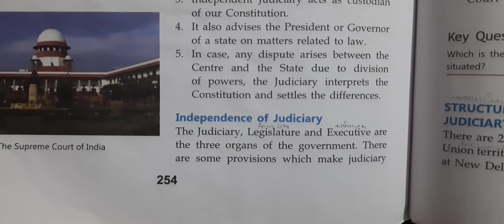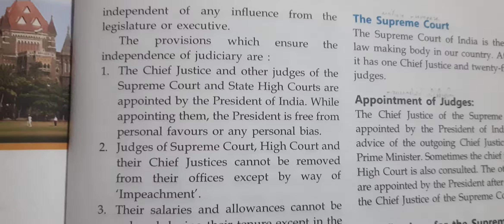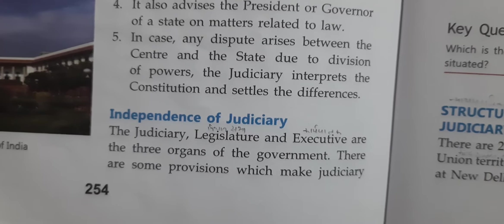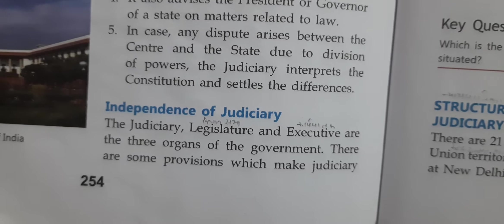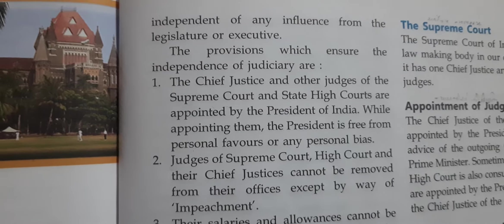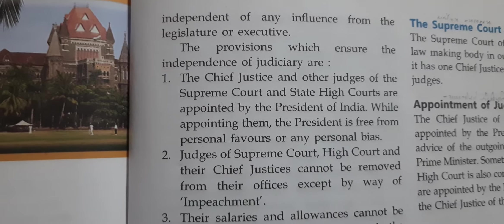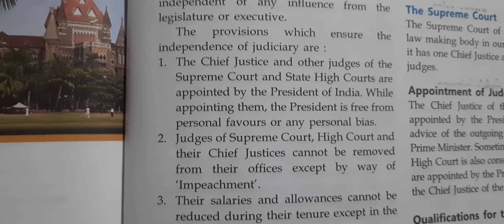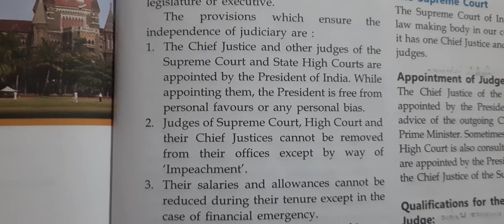Legislature and Executive are the three organs of the government. There are some provisions which make Judiciary independent of any influence from the Legislature or Executive. न्यायपालिका, विधानसभा और कार्यपालिका — ये तीन organ हैं सरकार के। कुछ ऐसे provisions होते हैं जिनमें न्यायपालिका स्वतंत्र रहती है और उस पर विधानमंडल या कार्यपालिका का कोई प्रभाव नहीं होता। तो वो provisions जो ensure कराते हैं न्यायपालिका की स्वतंत्रता —